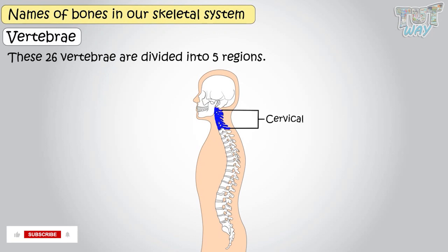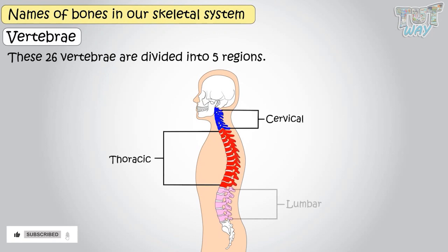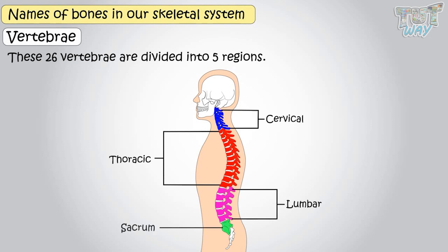The five regions are: the cervical region, the thoracic region, the lumbar region, the sacrum, and the coccyx.